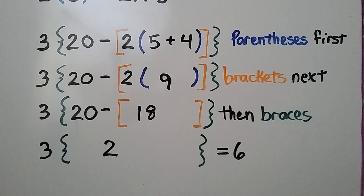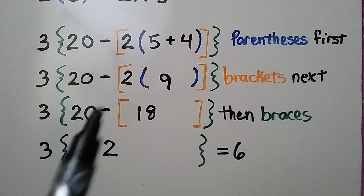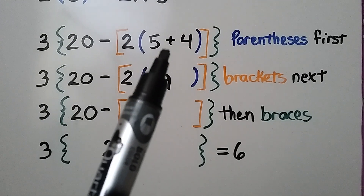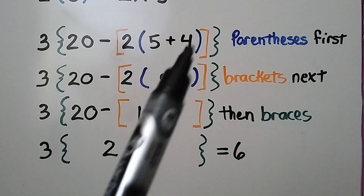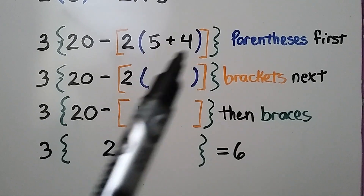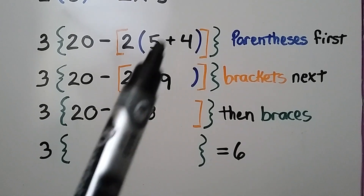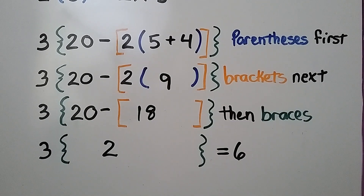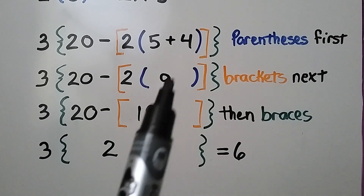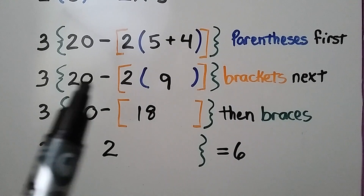When we see an expression like this, we begin with the innermost set of grouping symbols and work to the outermost set. In this case, we see parentheses — that's the innermost grouping symbol. We do the parentheses first, and 5 plus 4 is 9. Now our expression looks like this.